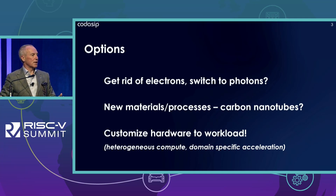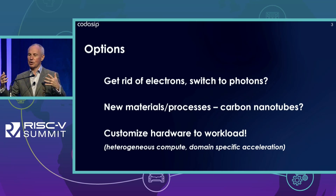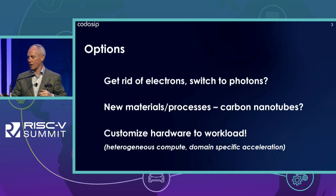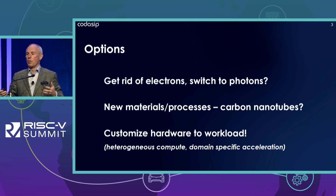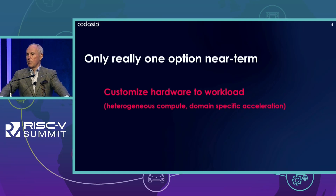So then what else do you do? It's exactly what Kevin was saying — let's rethink the design process, bring together software and hardware developers, and actually try to customize the code to the workload. It's what I've been calling heterogeneous compute; other people call it domain-specific acceleration. And obviously, that's the only thing short-term that one can go on. That's what CODISIP is all about, by the way.